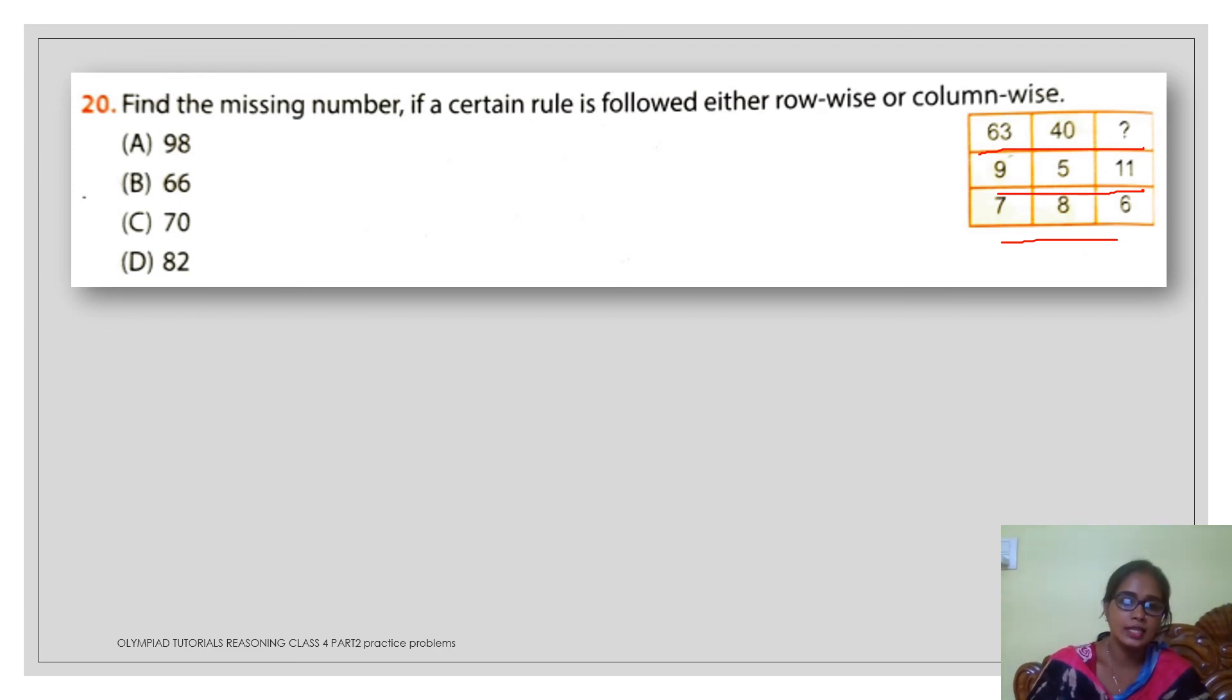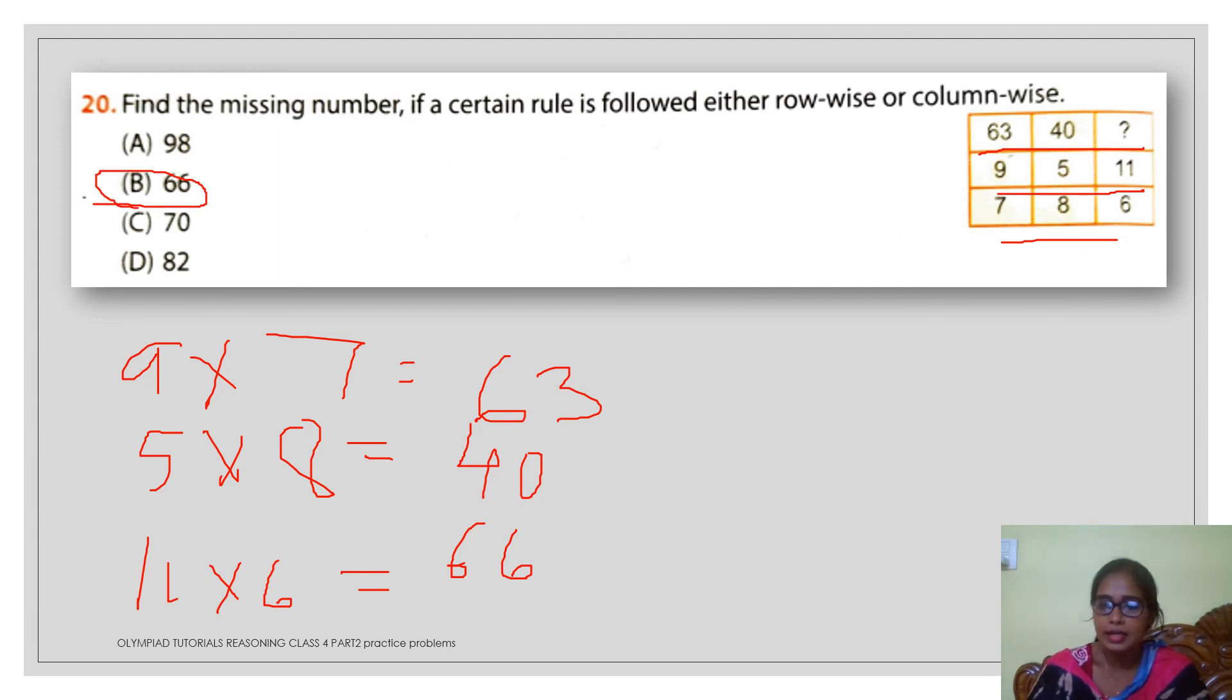If you can see here you have three numbers 63, 9 and 7. So 9 into 7 will give you 63. Similarly, if you look into the second column you will see that 5 into 8 will give you 40. Just if you use the same trick for the last column you are going to get 11 into 6 that is 66. So option number B 66 will be your correct answer.